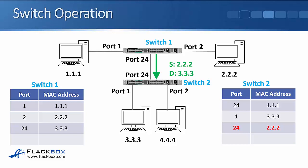Host 2.2.2 sends return traffic to destination MAC 3.3.3, hitting switch 1. Switch 1 sees 3.3.3 is reachable through port 24 and sends it out just that port. The traffic hits switch 2, which sees traffic from source MAC 2.2.2 arriving on port 24 and updates its MAC address table. It then forwards the frame out port 1 only, knowing that 3.3.3 is available there. Looking at switch 2's MAC address table now, both 1.1.1 and 2.2.2 are reachable on port 24 — this is normal when a switch is connected to another switch, where multiple MAC addresses appear on a single uplink port.